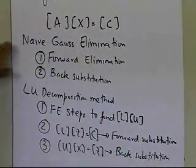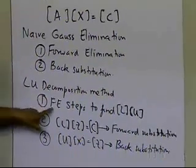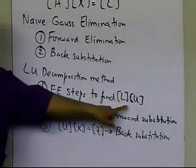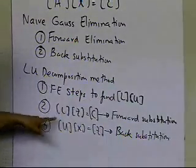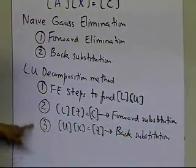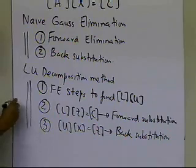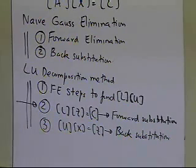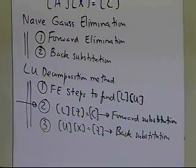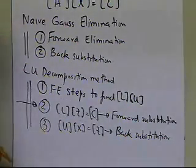What you are finding out here is that in Naive Gaussian method, you are using forward elimination and back substitution. In LU decomposition method, you are using the forward elimination steps to find the decomposition of the coefficient matrix into L times U, then you do forward substitution, and then back substitution. It is more work to do this than to do the Naive Gaussian method, because you have an extra step of forward substitution.